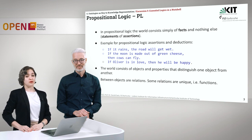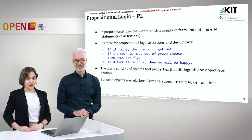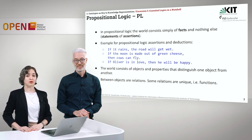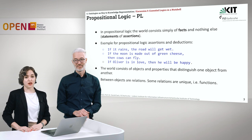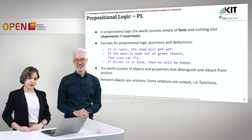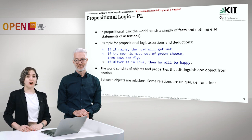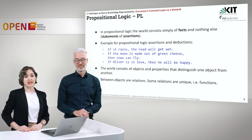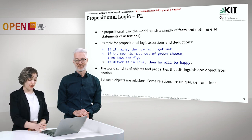In propositional logic, the world consists of objects and properties that distinguish one object from another. Between objects, we have relations. Some of these relations are unique, and that means they are functions.